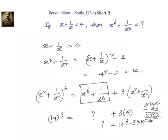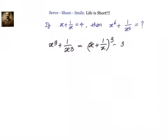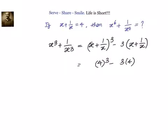Now the second method. We start by finding x cube plus 1 by x cube using the formula: x cube plus 1 by x cube equals (x plus 1 by x) whole cube minus 3 times (x plus 1 by x). Since x plus 1 by x is 4, this gives us 4 cube minus 3 times 4, which equals 64 minus 12, which equals 52.